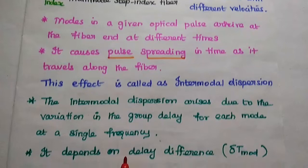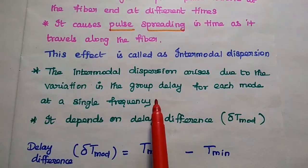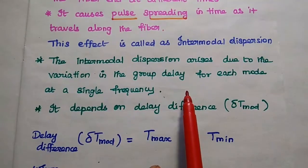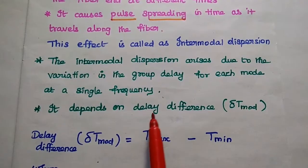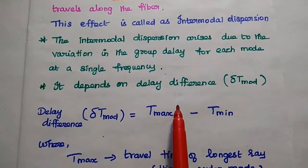So this intermodal dispersion arises due to the variation in the group delay for each mode at a single frequency. It depends only on the delay difference of this multiple paths.